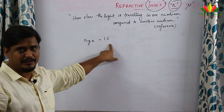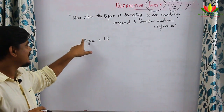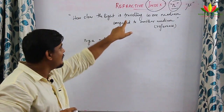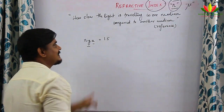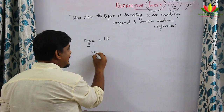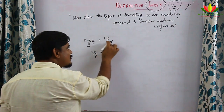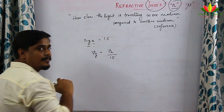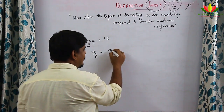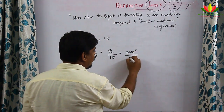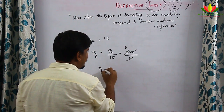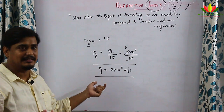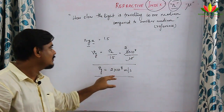...then refractive index of glass with respect to air is 1.5, meaning velocity of light in glass is 1.5 times slower than in air. So velocity of light in glass = velocity in air / 1.5 = (3×10⁸) / 1.5 = 2×10⁸ m/s.